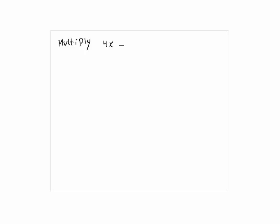So we have 4x minus 5 times 2x squared minus x plus 3. So you need to distribute here, and there are a couple of properties that you need to know.